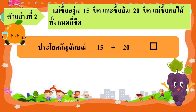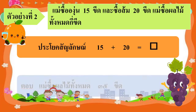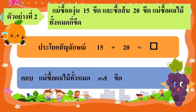15 บวก 20 เท่ากับ 35 นั่นเอง จึงทำให้เราสรุปได้ว่า แม่ซื้อผลไม้ทั้งหมด 35 ขีด สรุปคำตอบเป็นตัวเลขไทยกันด้วยนะคะ